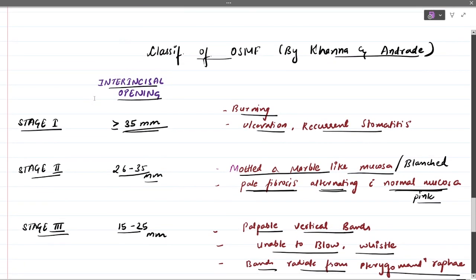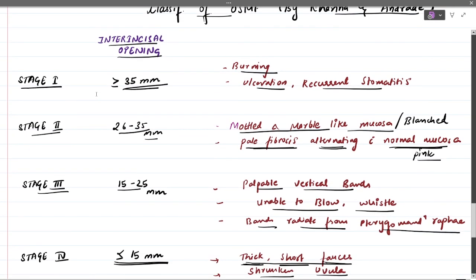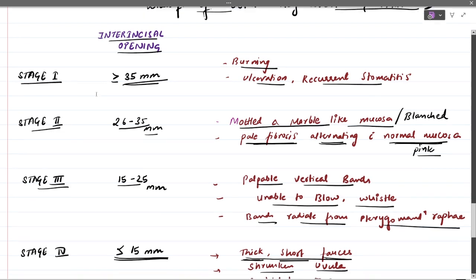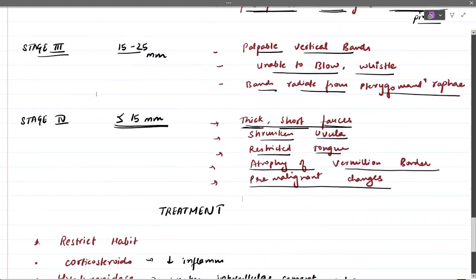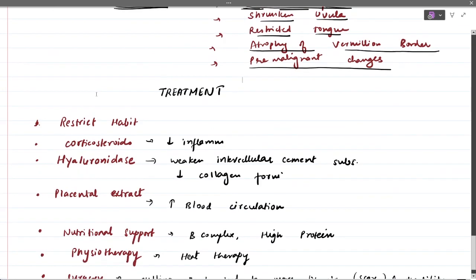In advanced stage, pre-malignant and malignant changes may also occur, since OSMF is a pre-malignant condition and may lead to malignancy in advanced stages. That was the classification by Khanna and Andrade based on mouth opening.